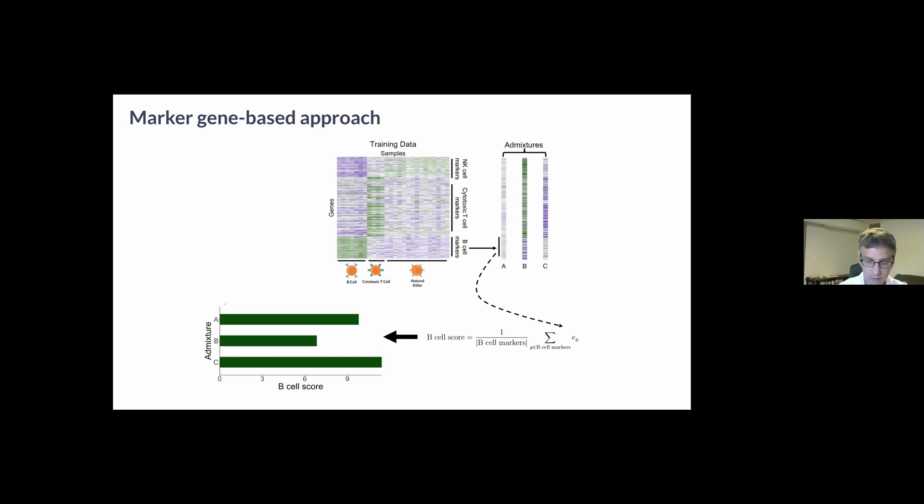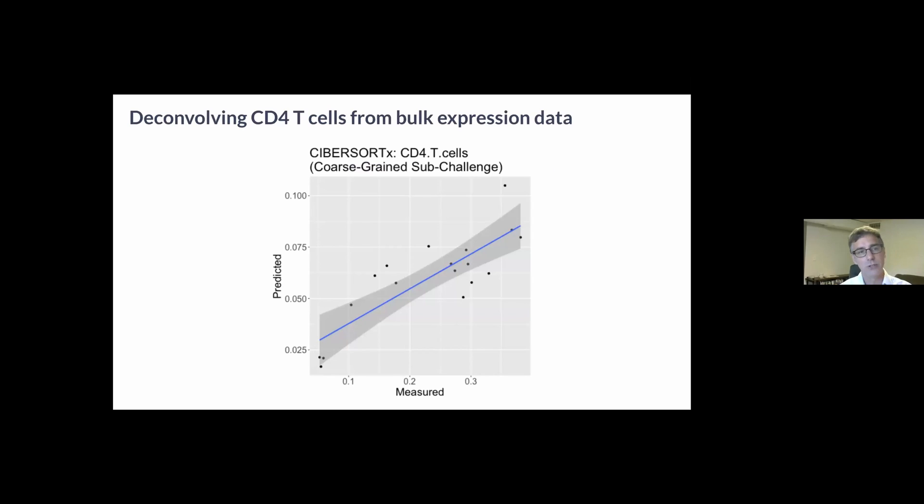We can compute this score across the admixtures, but notice now that the scores are on an arbitrary scale, whatever the scale of your gene expression is, and hence they can only be applied across samples, not across cell types.